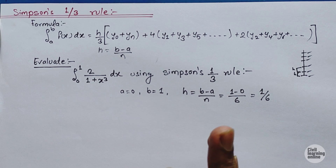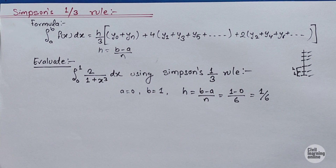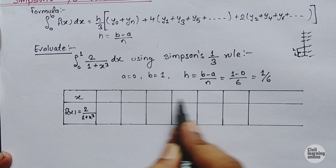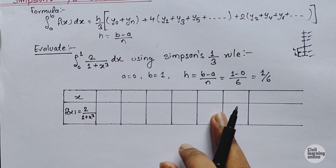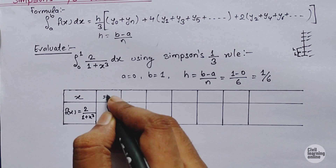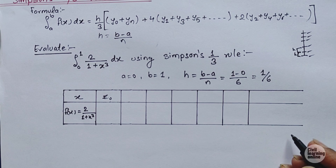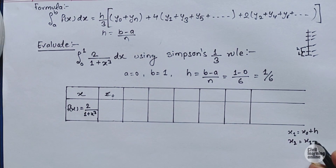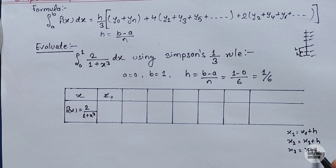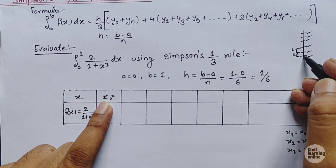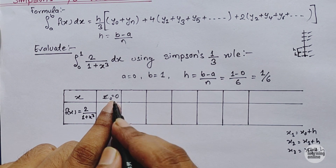Now we draw a table. We put different values of x, then calculate the corresponding values of y by substituting each x into the equation. We start with x-naught. We have x1 equals x-naught plus h, x2 equals x1 plus h, x3 equals x2 plus h, and so on. Since we start from the lower limit, x-naught equals 0.